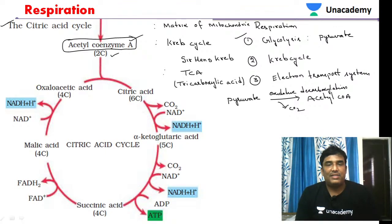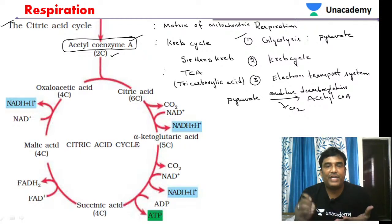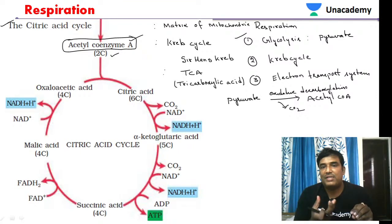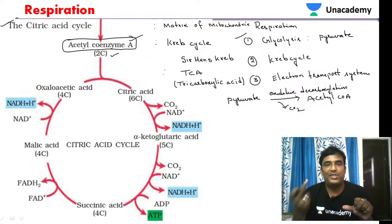The citric acid cycle takes place in the matrix of mitochondria. It is also called the Krebs cycle because it was first identified by the scientist Sir Hans Krebs, who first described the steps of this cycle. It is also called the tricarboxylic acid cycle because citric acid has three carboxylic groups.